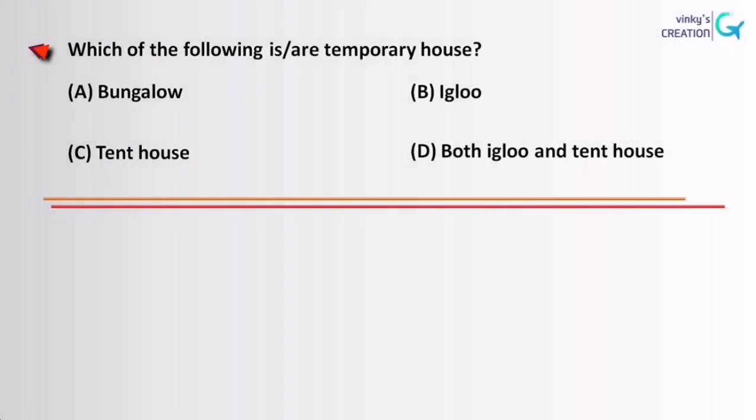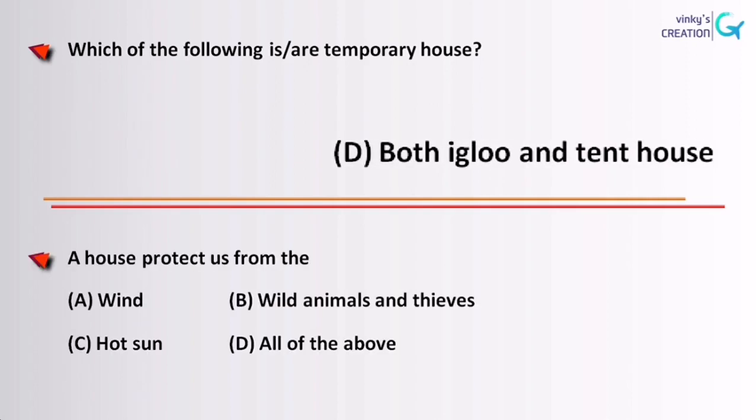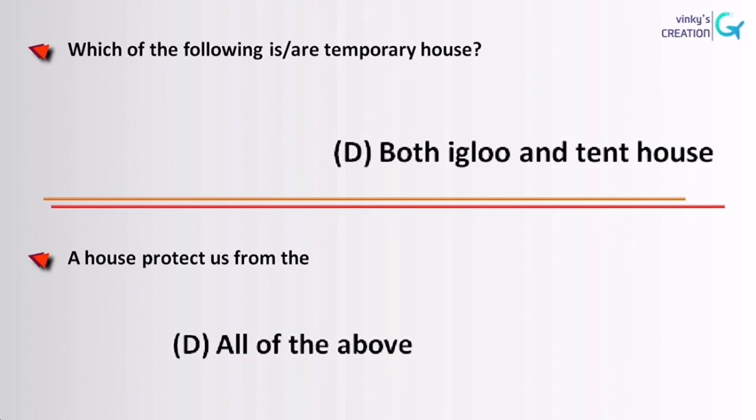Which of the following is a temporary house? Both igloo and tent house. A house protects us from all of the above.